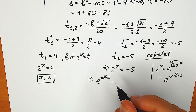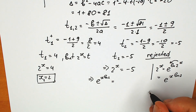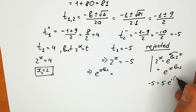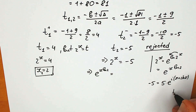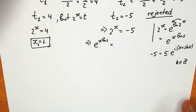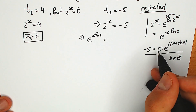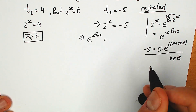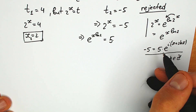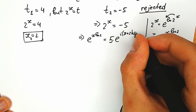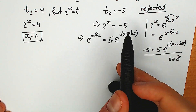Minus 5, in terms of Euler's identity, we can write as 5 times e to the power i·π plus 2k·π. According to Euler's identity — I don't want to prove it, I just want to use this expression — so instead of minus 5, we write 5 times e to the power (i·π + 2k·π). So we have our imaginary unit i and we can solve our equation.